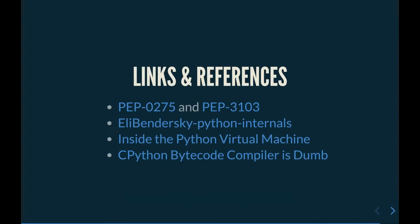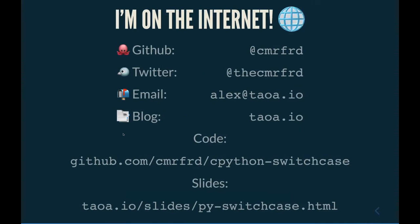That was pretty much it. All you have to do to add new syntax is: grammar, ASDL, and two functions to create the AST and bytecode. It's very straightforward — not too crazy. I was pretty surprised at how simple it was. There's great reference material online — Eli Bendersky has great blog posts on Python internals, and the blog post about the Go compiler is amazing. You can get the code on my GitHub and the slides are also up on my blog.